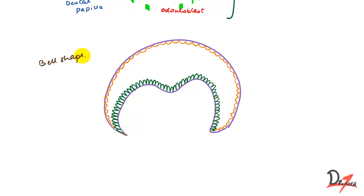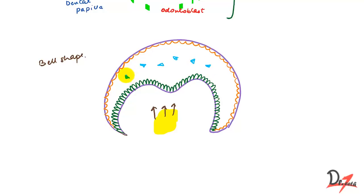It was first thought that the crown shape is determined by the pressure exerted by the growing dental papilla on the enamel organ. However, this pressure is shown to be opposed equally by the pressure exerted by the fluid present in the stellate reticulum. So the question arises: what actually causes different crown shapes to form?